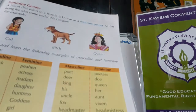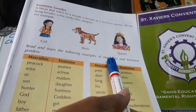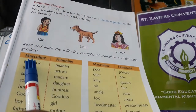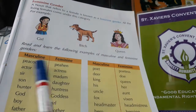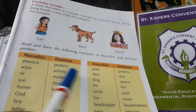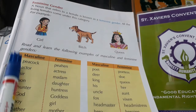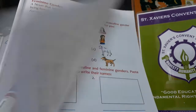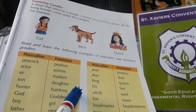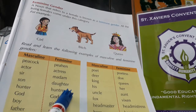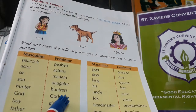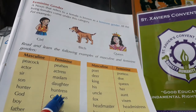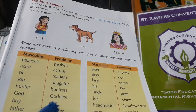Now see in your book. Read and learn the following examples of masculine and feminine gender: peacock–peahen, actor–actress, sir–madam, son–daughter, hunter–huntress, god–goddess (god means dev, goddess means devi), boy–girl, father–mother, bull–cow, cock–hen.